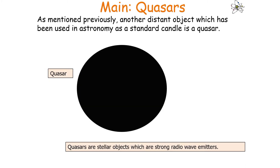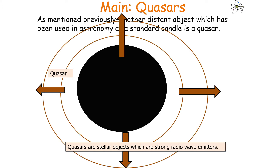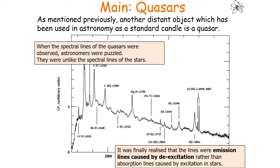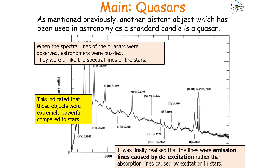Quasars are an object which we can use as a standard candle. They are stellar objects which are strong radio wave emitters, so you can observe a quasar by looking at its radio wave emission. When the spectral lines of quasars were observed, astronomers were puzzled because they were unlike the spectral lines of stars. It was finally realised that the lines from a quasar were emission lines caused by de-excitation, rather than absorption lines caused by excitation in stars, indicating straight away that these objects were extremely powerful compared to stars.